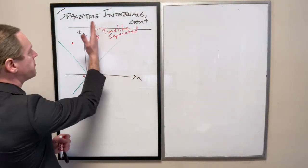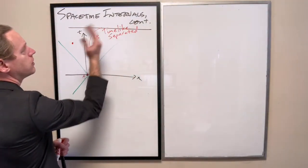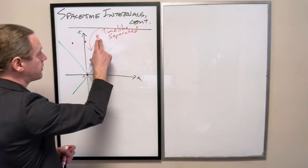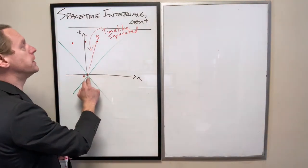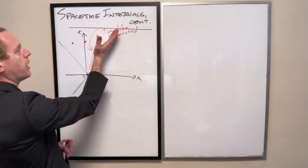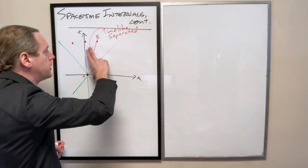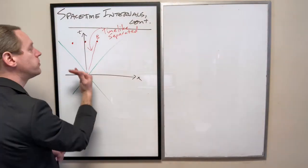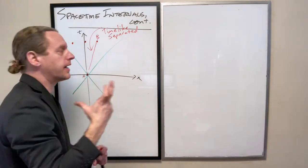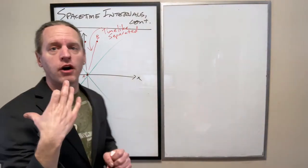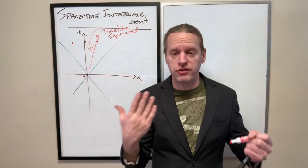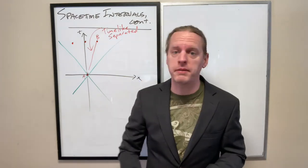And to be clear, any event B in that future light cone will be time-like separated from A. You can always find a unique reference frame where those two events A and B will both occur at the origin. So they are only separated in time in that one reference frame at least.